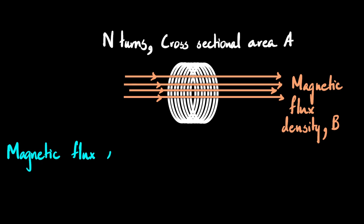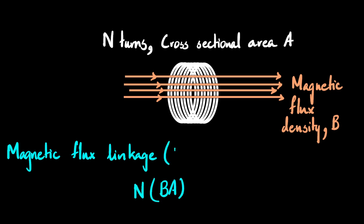Magnetic flux linkage is a term reserved for coils with a number of turns. It doesn't have a special symbol of its own — the total magnetic flux linkage equals BA multiplied by the number of turns N. So it is written as NΦ, where Φ = BA. Therefore NΦ = NBA.